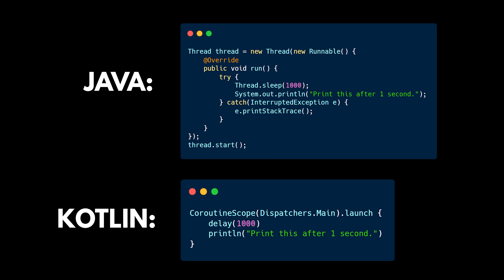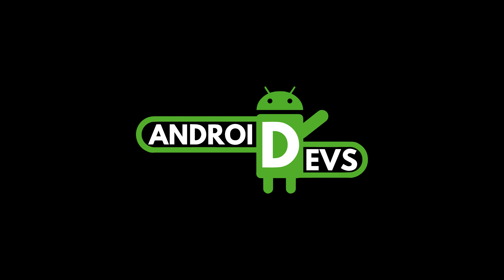The last example demonstrates what you need to do in each language to delay your code for one second — simply printing something after one second has passed. In Java you have to create a thread, inside the thread create a new Runnable, and inside that Runnable make a try block because a thread can throw an InterruptedException when you call the sleep method. After that you can print something and also start the thread. In Kotlin, you can just launch a coroutine that does the same in only four lines, which is really awesome.